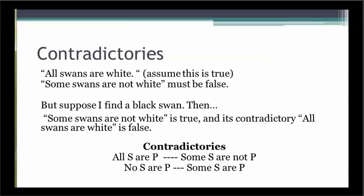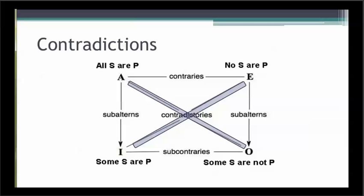Likewise, if the claim 'all swans are white' is true, then the O claim 'some swans are not white' is necessarily false. They are contradictories. The E and I claims always have the opposite truth values. Contradiction is one of the most fundamental relationships in categorical logic. If you know the truth value of any of the four claims, you can automatically infer the truth value of its contradictory. Such inferences are called direct or immediate inferences because you can go straight from the truth value of one claim to its contradictory claim with no further premises. Contradictories always have the opposite truth value — they are the diagonals across the square of opposition.